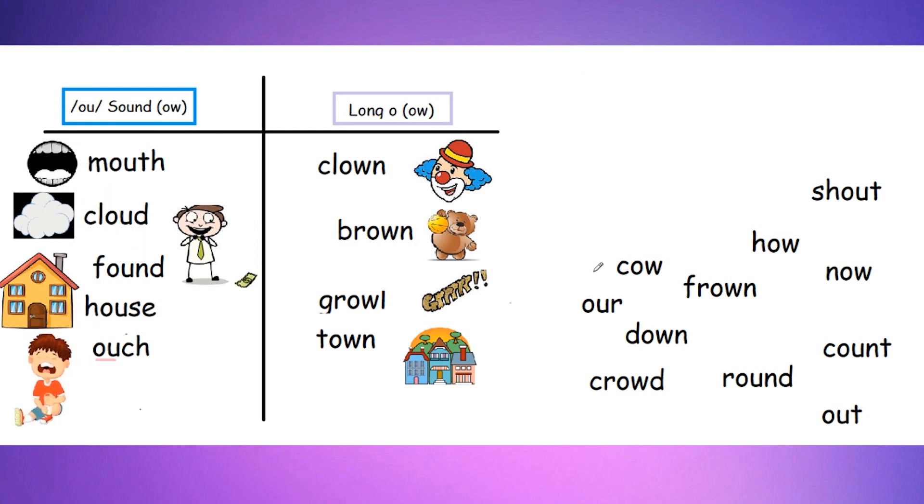All right, next word we're going to look at here is going to be cow. Remember, we're hearing that OW at the end. And we see OW and not OU. So we can put that in our long O category. And I'm sure you know what a cow is. They make the sound moo. And they are an animal.